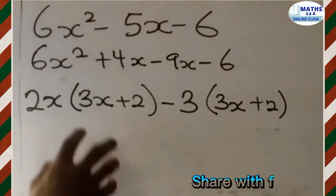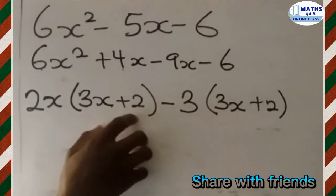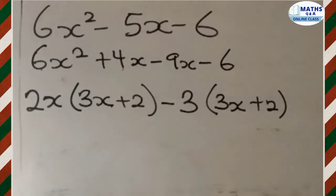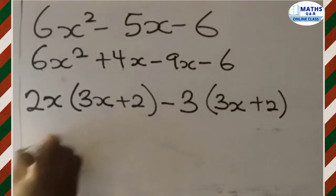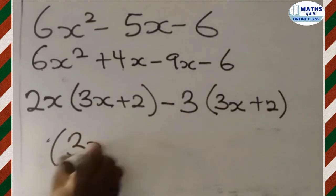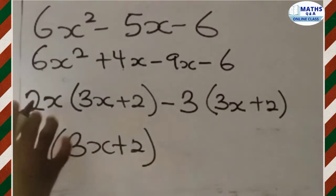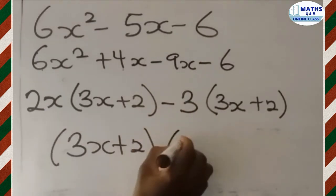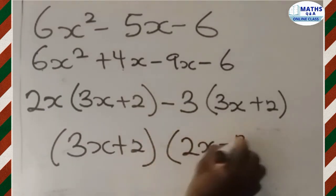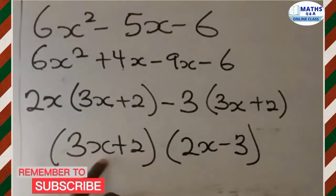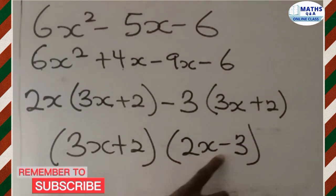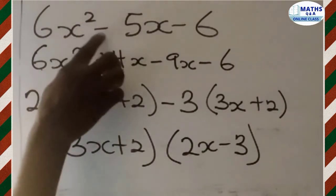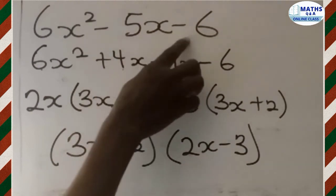Now we can see that we have common terms. We have 3x plus 2 in the first bracket, and we also have the same 3x plus 2 in the second bracket. So we write one of them in brackets: (3x + 2), and then group the outside terms together to get (2x minus 3). Therefore, 3x plus 2 multiplied by 2x minus 3 is the factorized form of 6x squared minus 5x minus 6.